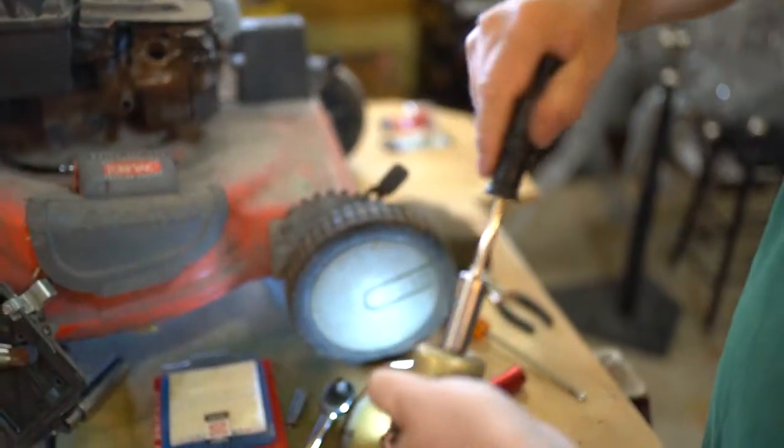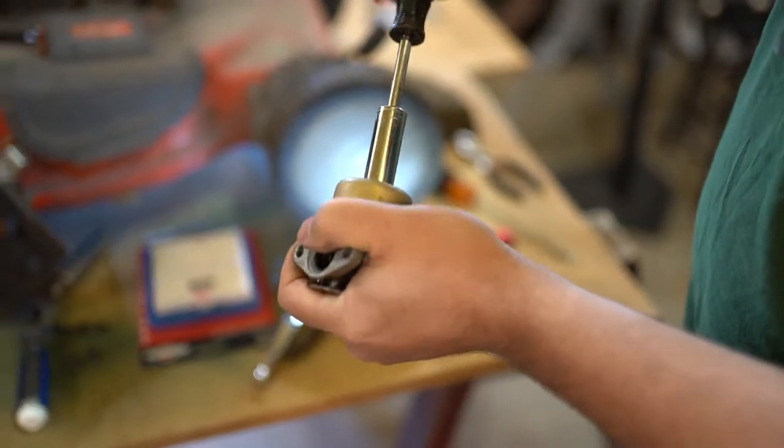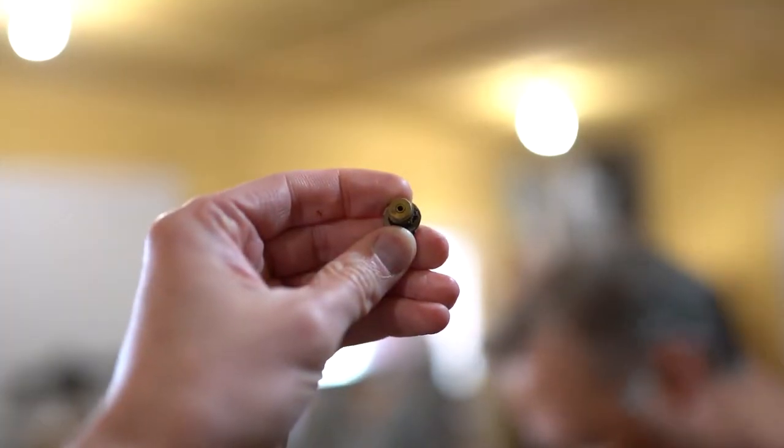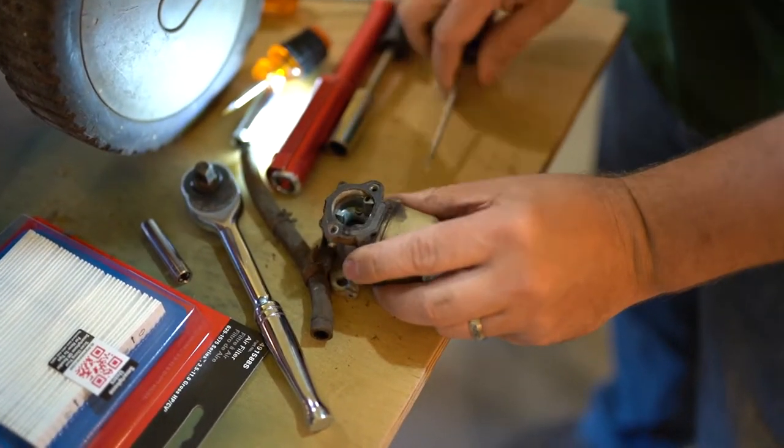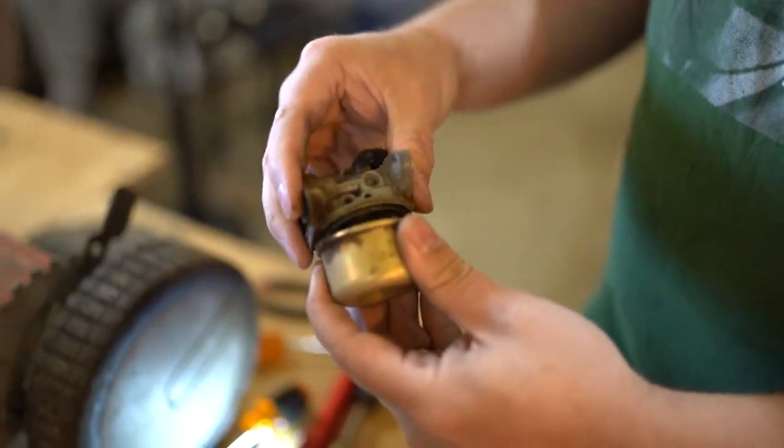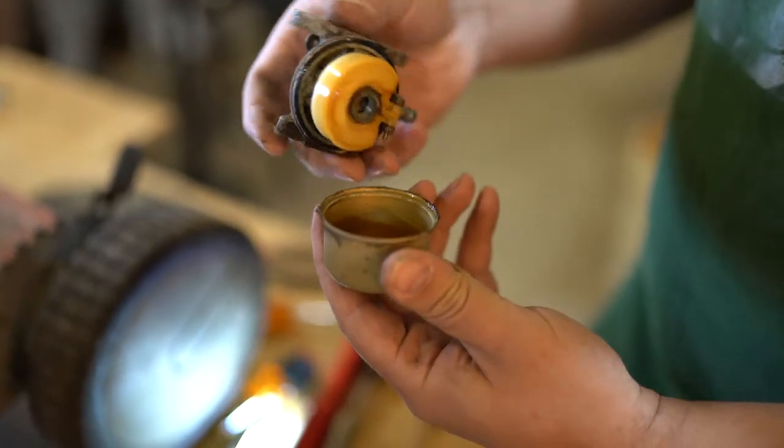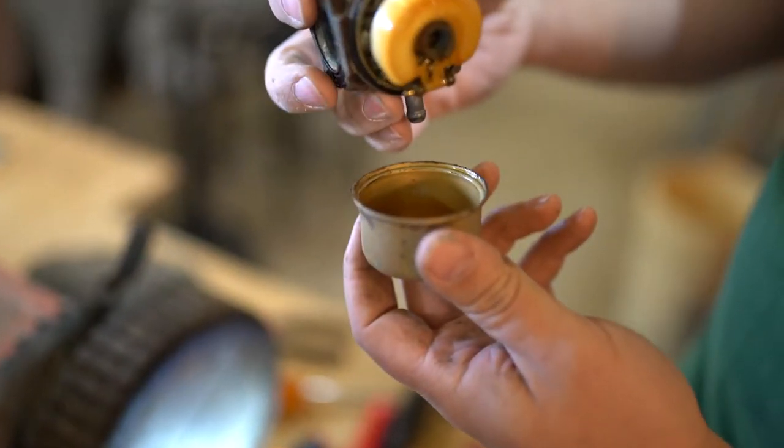Let's use a 13 millimeter socket to remove the bowl's nut and have a look inside. It's kind of difficult to see if the jets are clear. It doesn't look horrible.